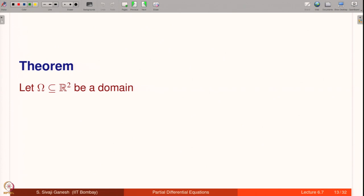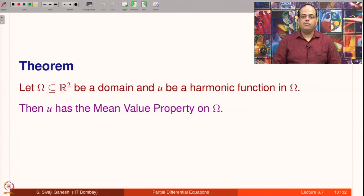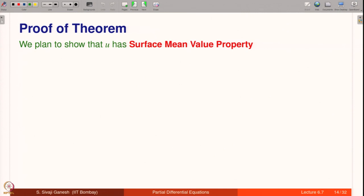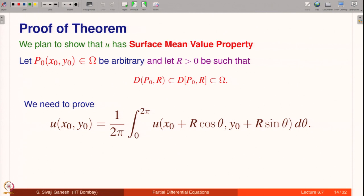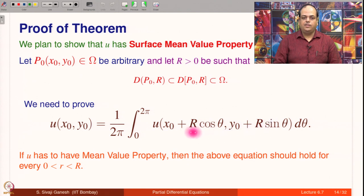Let us now prove the mean value principle. Let omega be a domain in R² and U be a harmonic function on omega; then U has the mean value property on omega. For the proof, we plan to show that U has the surface mean value property. Let p₀ = (x₀, y₀) in omega be arbitrary and let capital R be such that the open disc is contained in the closed disc, which is contained in omega. We need to prove that U at the center of the disc equals the average of U on the circle, and this should hold when capital R is replaced by any small r less than R.